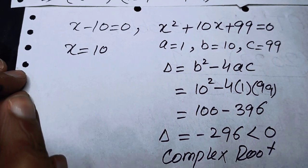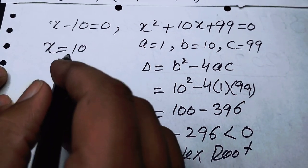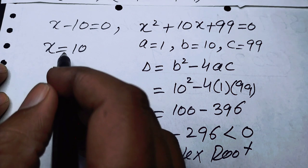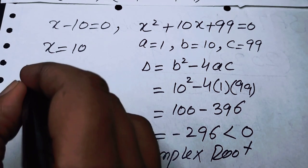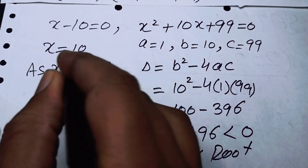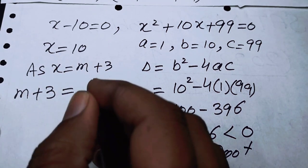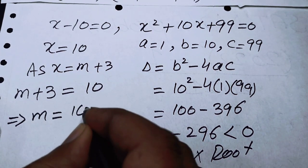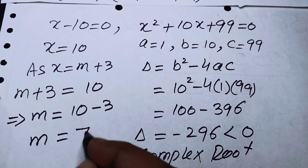We proceed with only x equals 10 and back-substitute. Recall from the start we set x equal to m plus 3. Substituting back: m plus 3 equals 10, so m equals 10 minus 3, giving m equals 7.